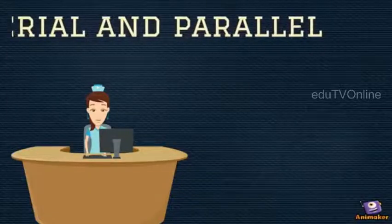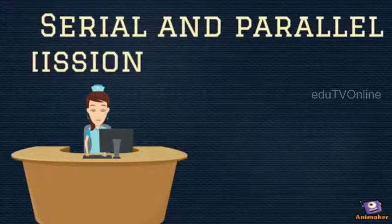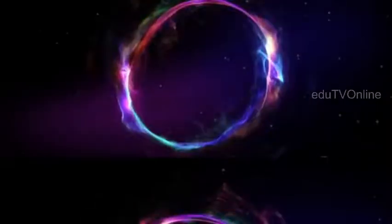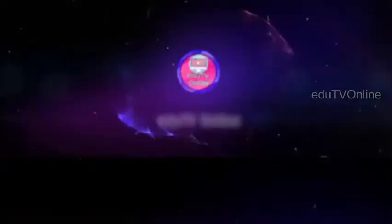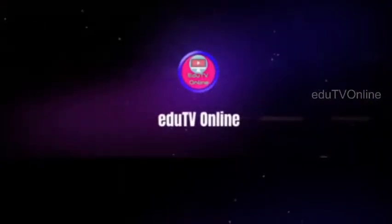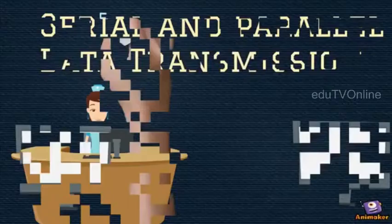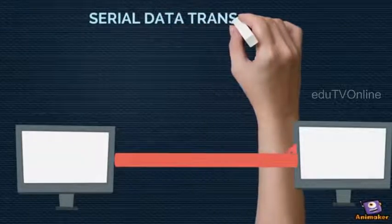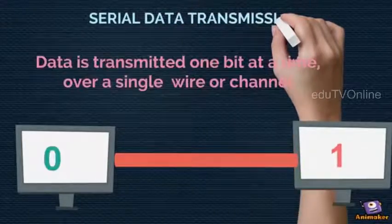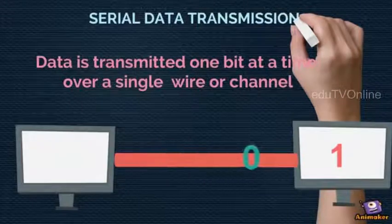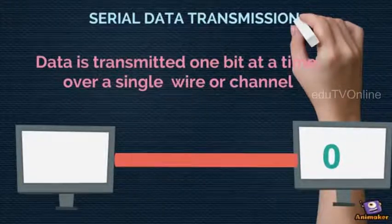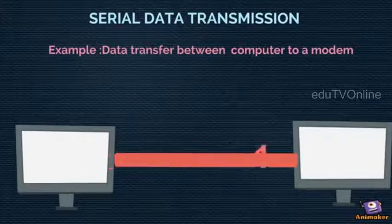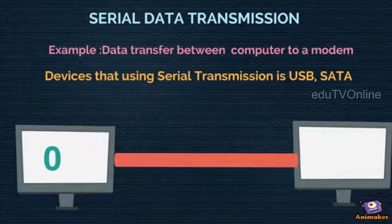Serial and Parallel Data Transmission. In serial data transmission, data is transmitted one bit at a time over a single wire or channel. Bits are sent one after the other in a single stream. An example of its use is sending data from a computer to a modem for transmission over a telephone line.